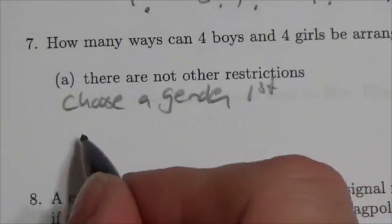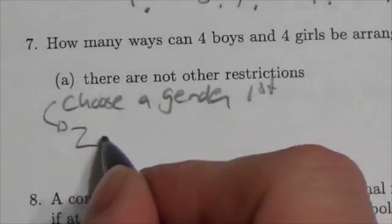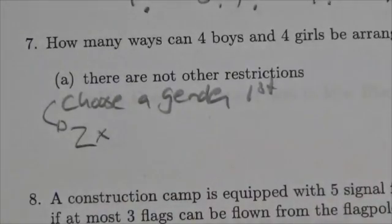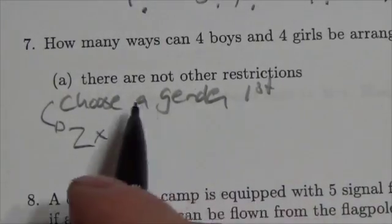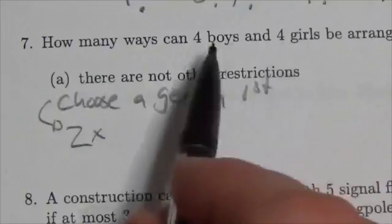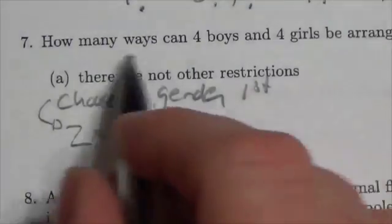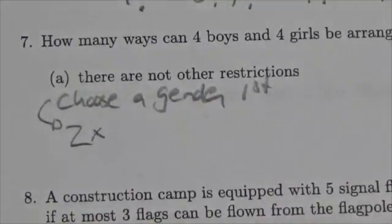And there are two choices. Now once the gender is chosen, it's actually fairly straightforward. So let's just say because of the way this is written, let's say we choose the boys to come first. Now of the boys, once we've chosen the gender to come first, we know that we have to alternate.